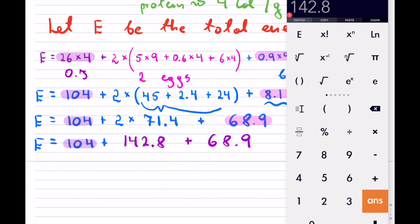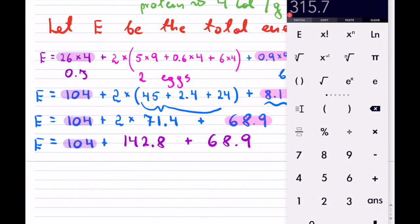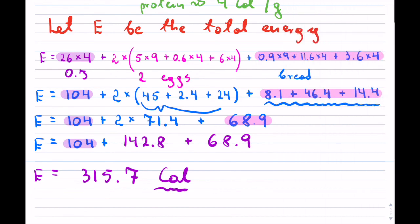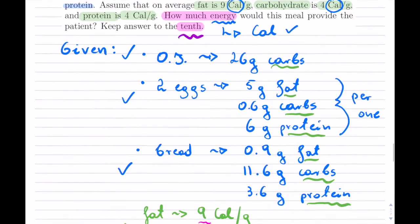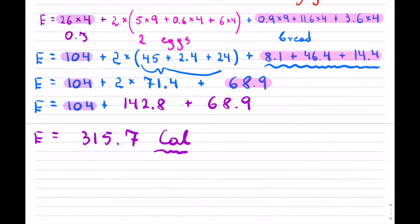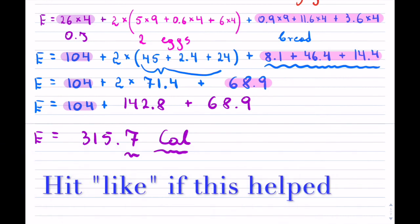And now we're done — we can add these together. My energy from this meal, and remember it's in calories. Let's check our rounding — it was supposed to be to the tenth, and it's actually already in the tenth. So we are done. Thank you for watching.